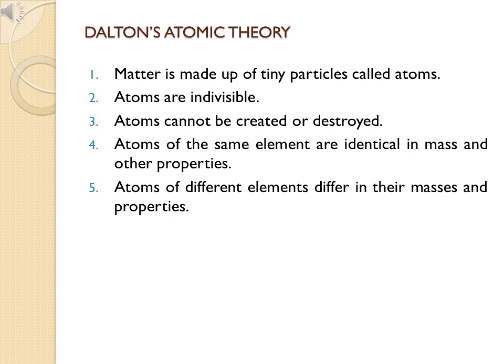Before moving further into symbols, let's look at John Dalton's atomic theory. According to Dalton: number one, matter is made up of tiny particles called atoms. Number two, atoms are indivisible. During Dalton's time there weren't many scientific instruments, so with the studies he had done he concluded atoms are indivisible. We now know atoms are actually divisible into three subatomic particles — electrons, protons, and neutrons.